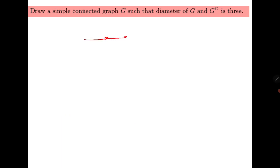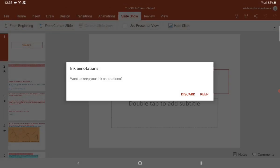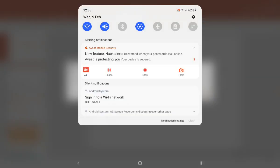The last question: draw a simple connected graph whose diameter is 3 and whose complement also has diameter 3. The answer is P_4, since its diameter is 3 and its complement is also P_4 with diameter 3. There could be other examples, but this is the simplest. That's all from today's class — thank you very much for attending.